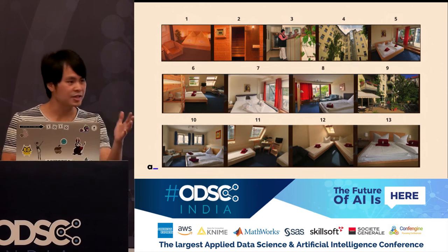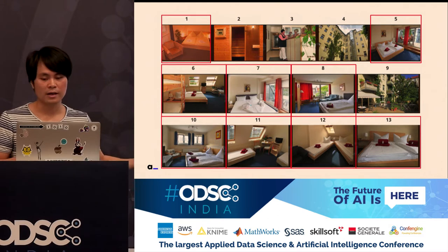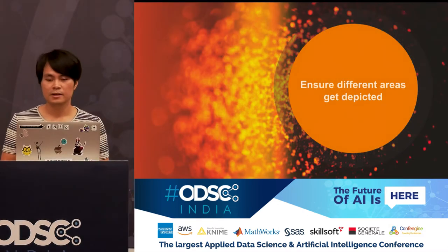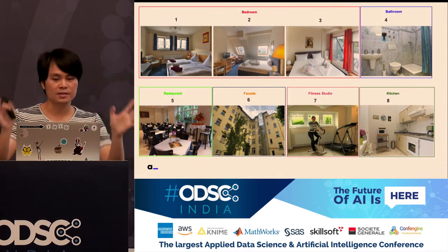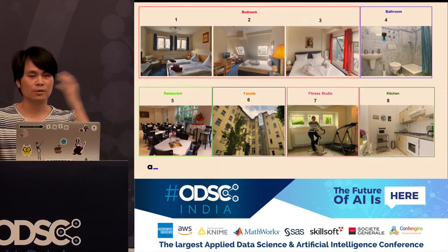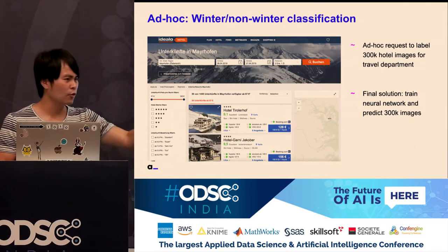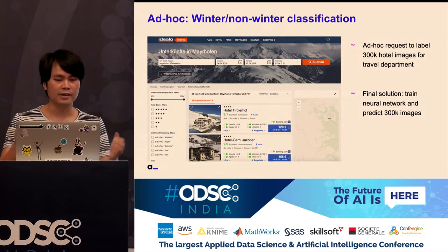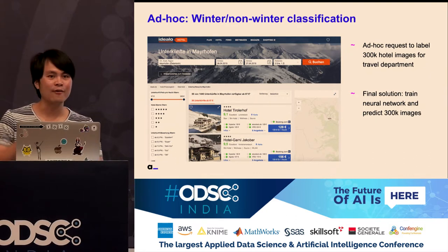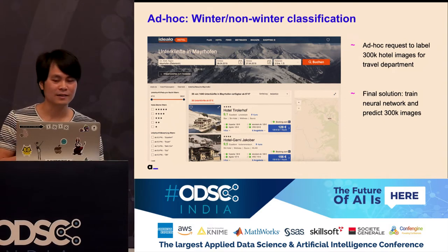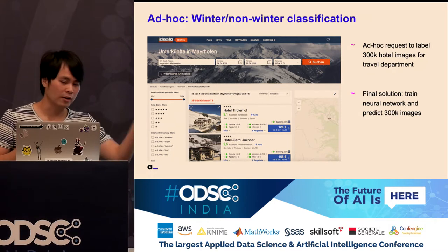But our main problem is image tagging. When you look at a gallery, you see a lot of beds — so you have many bedrooms. What you want to ensure is that different areas get depicted. That's where image tagging comes in: you want bedrooms, bathrooms, restaurants, fitness studio, kitchen, foyer, reception, pool, and so on. We also had a lot of ad hoc requests from different teams, like a special winter skiing thing — if you want to show only winter images on a listing during the skiing season, that's a convenient feature on a price comparison website.